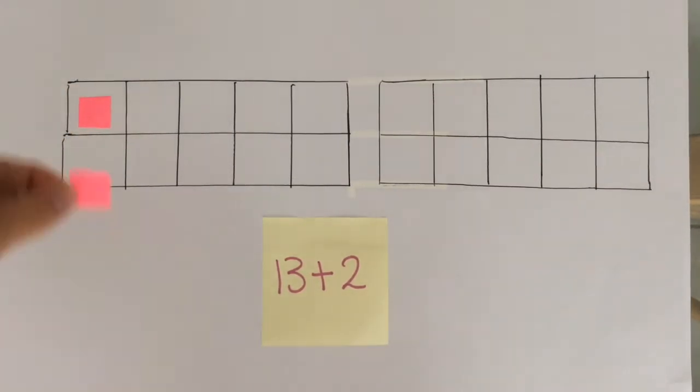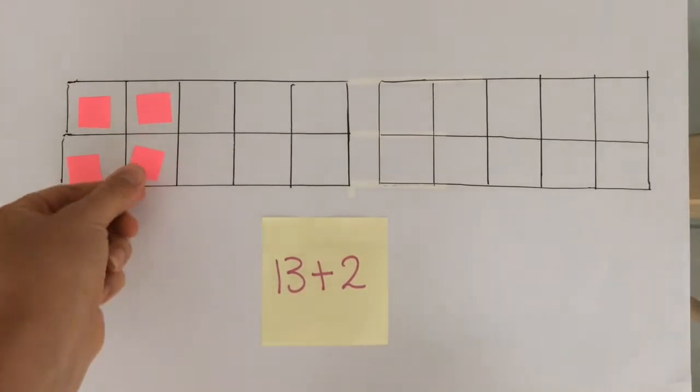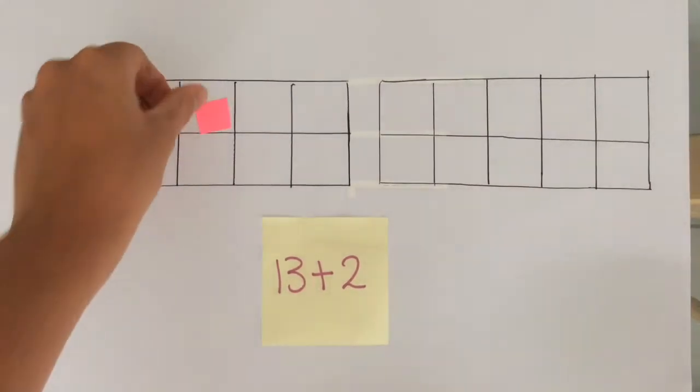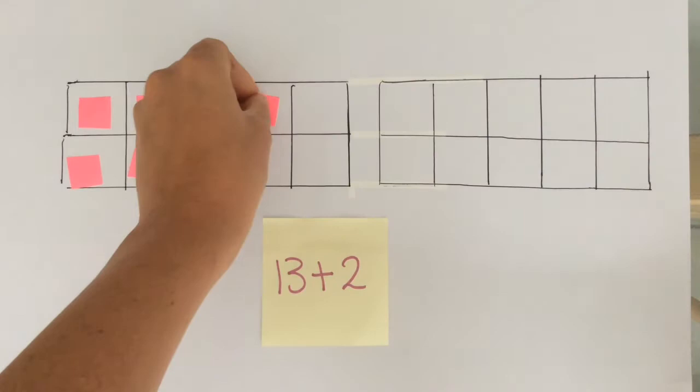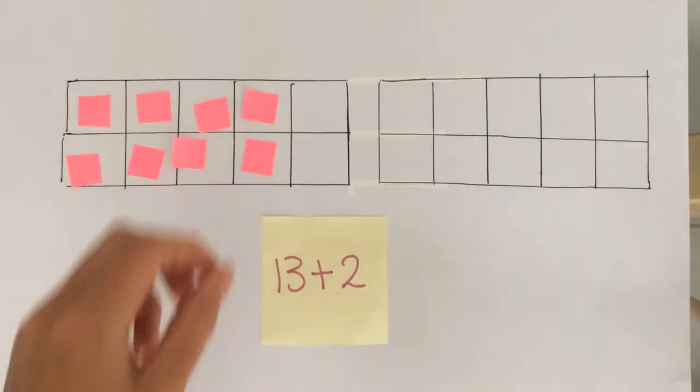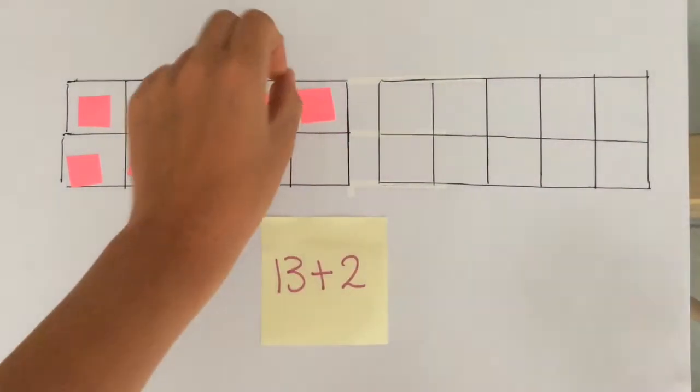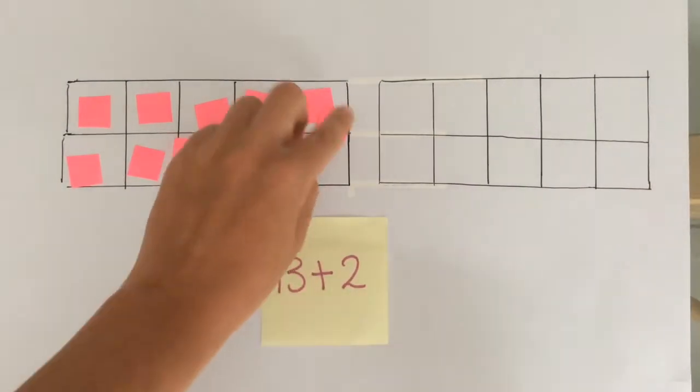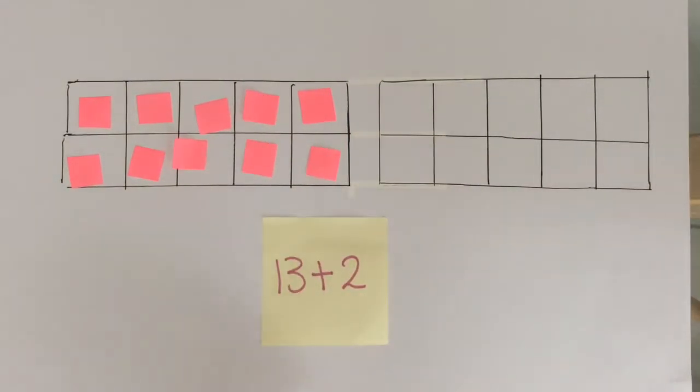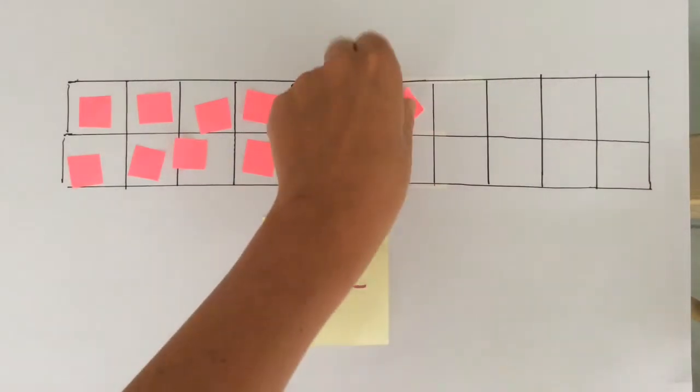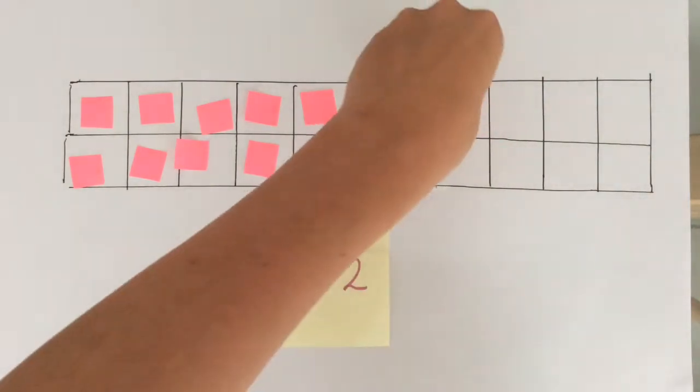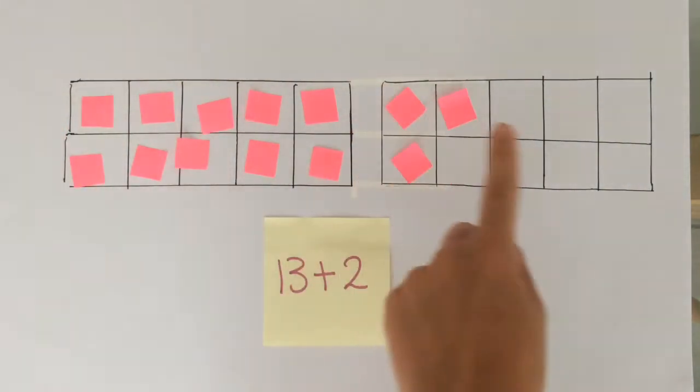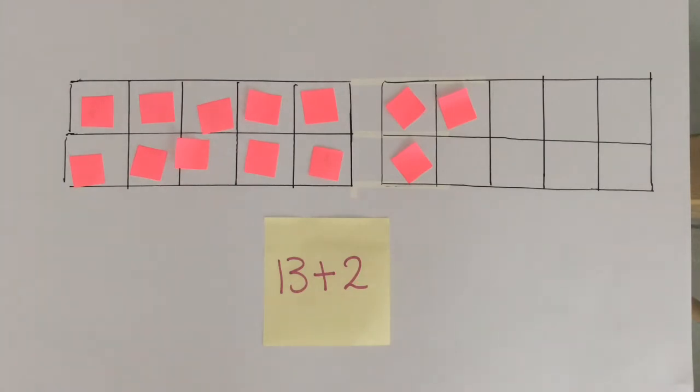1, 2, 3, 4, 5, 6, 7, 8, 9, 10, 11, 12, 13. So as you can see we have 1 ten and 3 ones. 13.